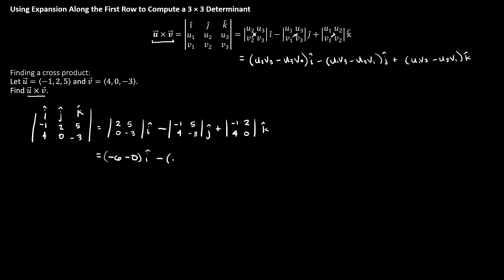Then I move on to my next 2x2 matrix, multiply my first diagonal, I get positive 3 minus my second diagonal, gives me minus 20 there.